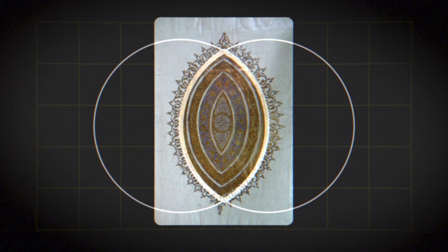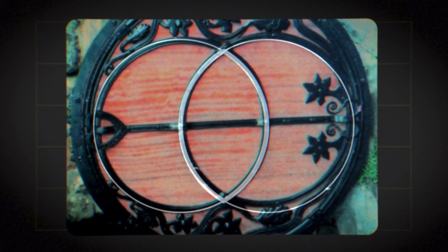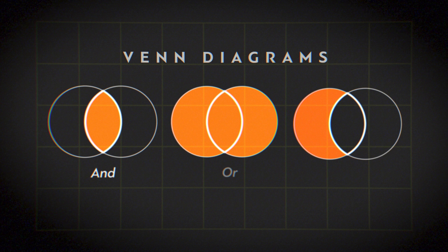As the Mandorla in Christian art and in mysticisms as the Vesica Piscis circles. Remarkably, this shape also surfaces in modern science.